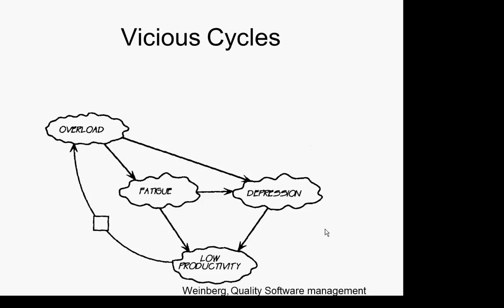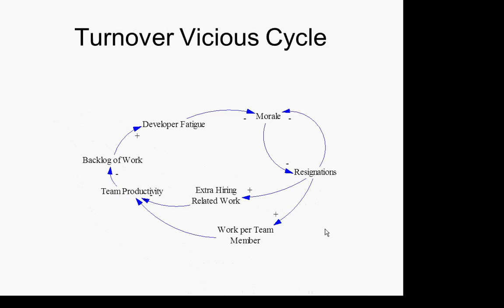Turnover: if there's a backlog of work it leads to greater developer fatigue and greater developer hours, which lowers morale. Morale leads to resignations, which lower morale as well. Resignations lead to greater work per team member, which tends to lower team productivity — people are thrashing, switching between tasks rather than keeping a rhythm — and that leads to a worse backlog of work. Is this a reinforcing or balancing loop? It's a reinforcing feedback — in this case a vicious cycle: morale goes south, resignations increase, which drives morale even lower.